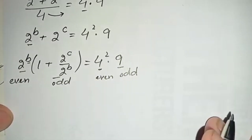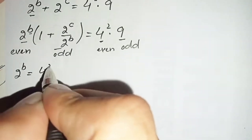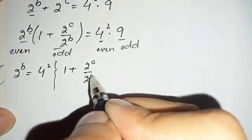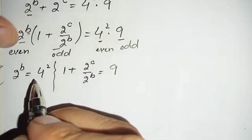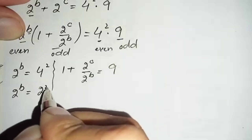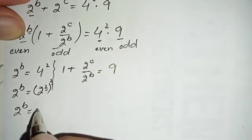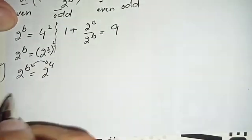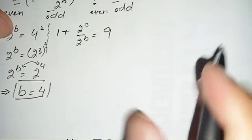Comparing again, we get two new equations. The first is: 2 raised to power b equals 4 squared. We rewrite 4 as 2 raised to power 2, so 4 squared equals 2 raised to power 2 times 2, which is 2 raised to power 4. Since the bases are the same, comparing powers gives b equals 4. This is the value of our second variable.